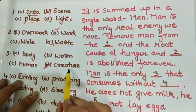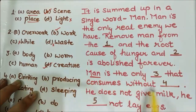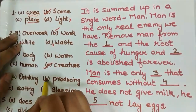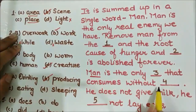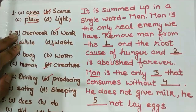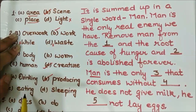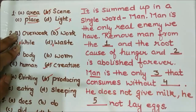The fourth blank: 'consumes without ___.' We consume without producing. We cannot produce anything which can help nature. The other options — without drinking, without eating, without sleeping — are not viable. So the answer is: without producing.